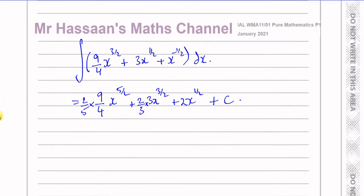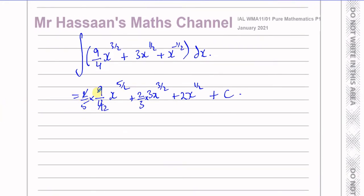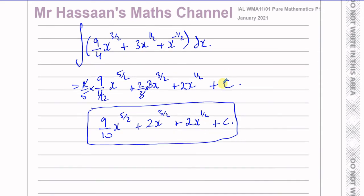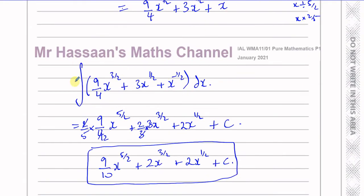So let's simplify this. The 2 cancels with the 4, leaving 2 here. So this is going to be 9/10 · x to the power of 5/2. The 3 cancels with the 3, giving plus 2x to the power of 3/2, plus 2x to the power of 1/2, plus c. Don't forget the plus c, otherwise you'll lose a mark. When you integrate without any limits, there is a constant of integration that you must write down.